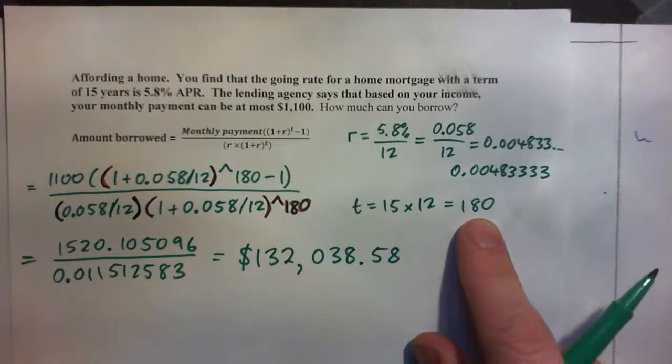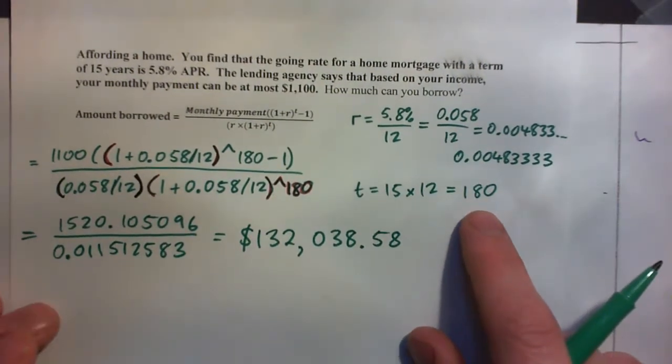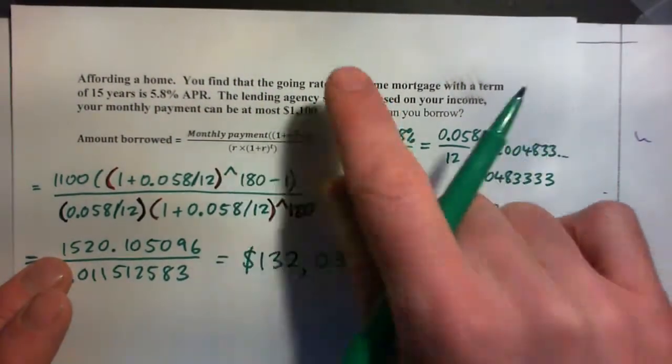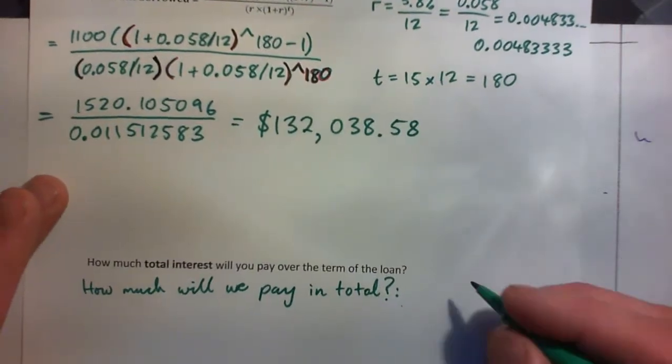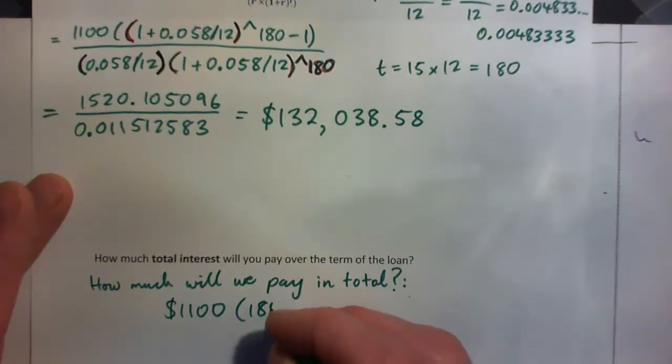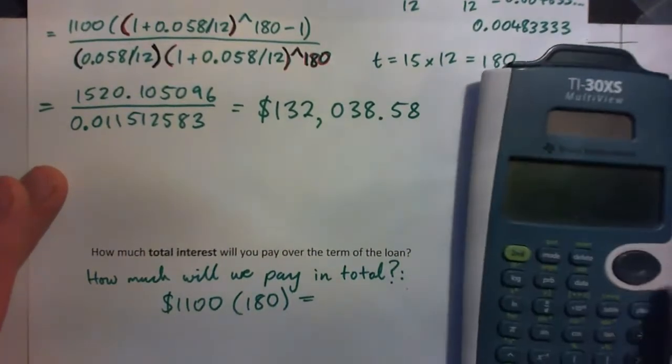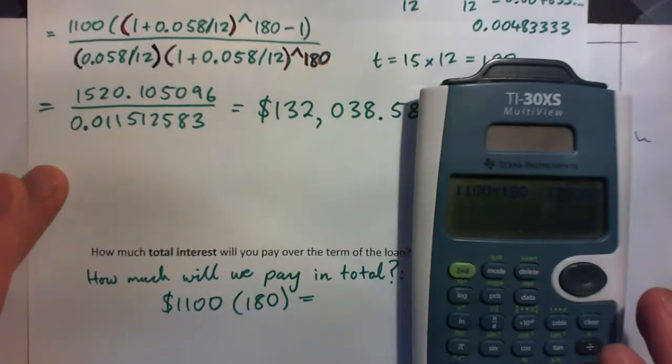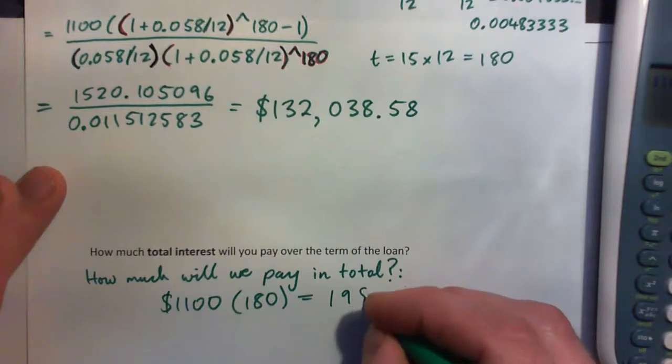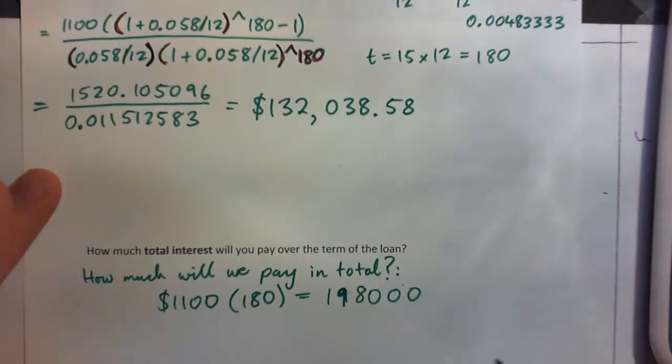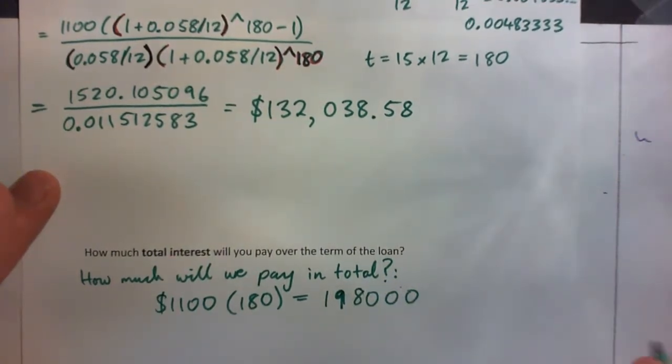Now remember, this is leaving out your property taxes, homeowners insurance and all the things, but this is just the payment back on the loan. So how about do this? Your $1,100 times 180 payments makes what? 198000. 198000. So tell me about that number. What does that mean? What do you think that means?